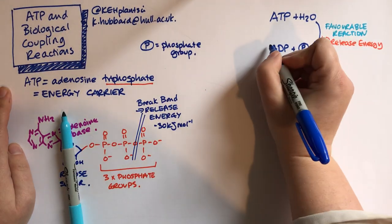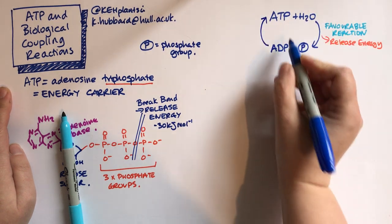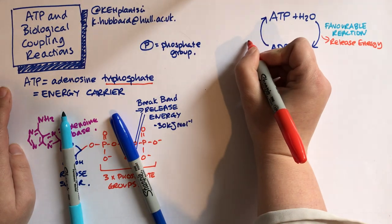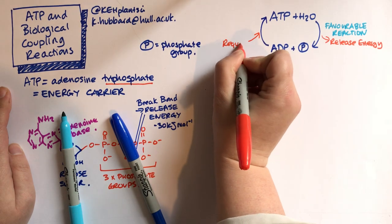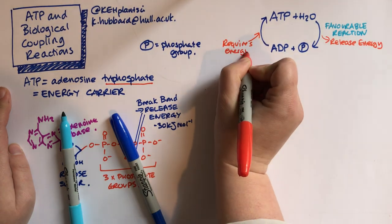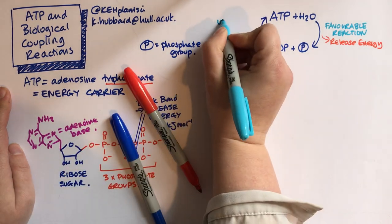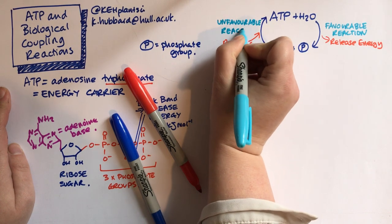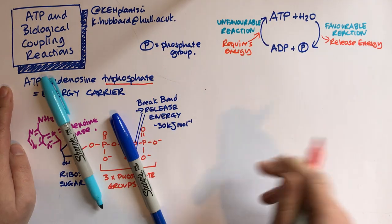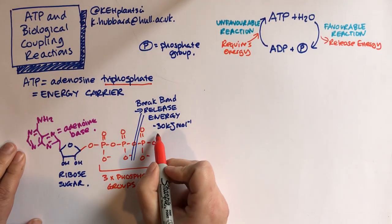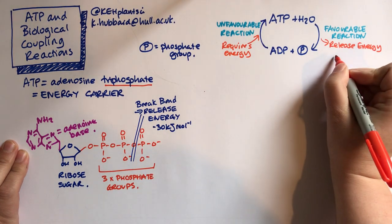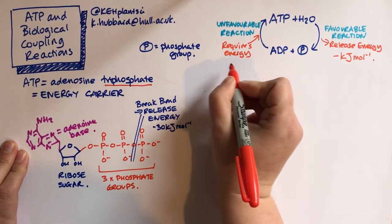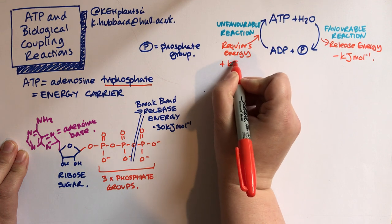Of course, that means that going in the other direction, if we wanted to make some more ATP from ADP plus free phosphate, that reaction would require energy. So that would be an unfavourable reaction. So in terms of how we express this mathematically, you'll notice that here I had minus 30 kilojoules per mole - releasing energy gives us minus kilojoules per mole, that's the way it's expressed. And if you need energy for a reaction, we express it as plus kilojoules per mole.